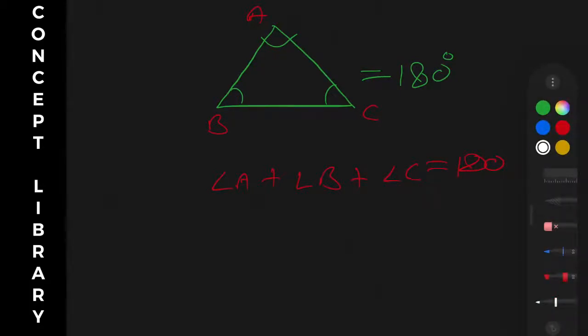Just draw a parallel line parallel to BC. This angle will be equal to this angle, and this angle will be equal to this angle, because whenever you have a parallel line...